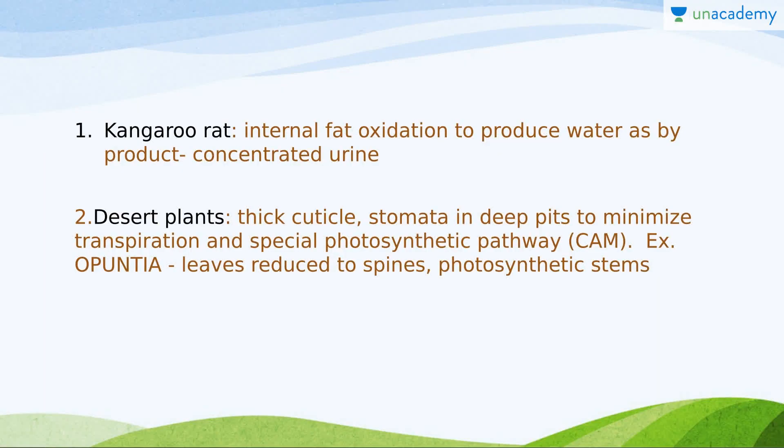Examples include the kangaroo rat, which performs internal fat oxidation to produce water as a byproduct and also produces concentrated urine — because in the desert there is no water, it does these things to preserve water. Desert plants have thick cuticles, stomata in deep pits to minimize transpiration, and use a special photosynthetic pathway — the CAM pathway. An example is Opuntia, in which leaves are reduced to spines and stems are photosynthetic.